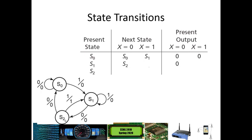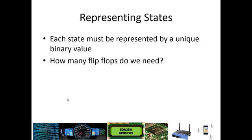If we're in S1 and we get a 1, we transition back to S1 with output 0. If we're in S2 and we get a 0, we transition back to S0, outputting 0. If we get a 1 in S2, that is the one place where we output a 1, saying we did find our goal state, and at that point we transition to S1.